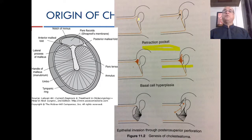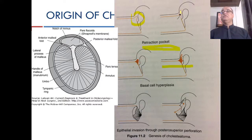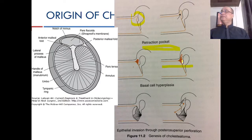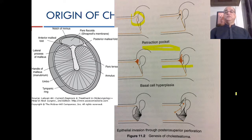The retraction pocket starts as a shallow small one and gradually increases as shed squamous epithelium accumulates, ultimately giving way. This illustrates basal cell hyperplasia in Rudy's theory — the microcholesteatoma — which ultimately results in a posterosuperior marginal perforation.